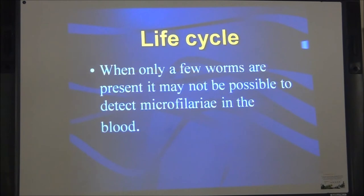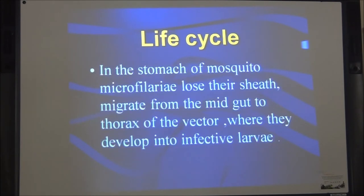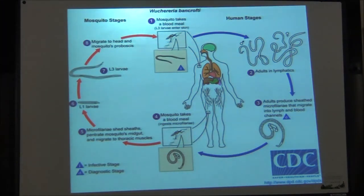When only a few worms are present, it will not be possible to detect microfilaria in the blood. The microfilaria are taken up by a mosquito vector when it sucks blood, and those not ingested die within 6 months to 2 years. The life cycle continues in the stomach of the mosquito — the microfilaria lose their sheath, migrate from the midgut to the thorax of the vector, where they develop into infective larvae. This is the diagrammatic representation of the life cycle of W. bancrofti, and similar is the case for Brugia malayi.